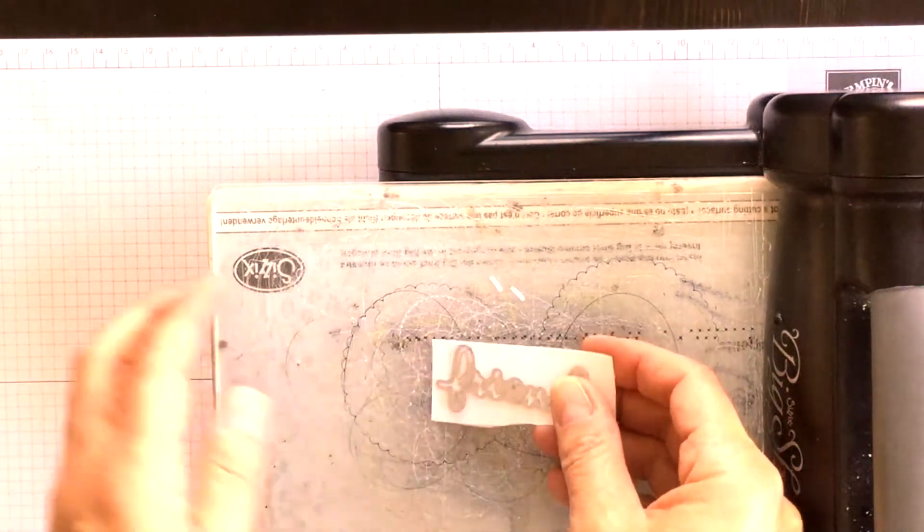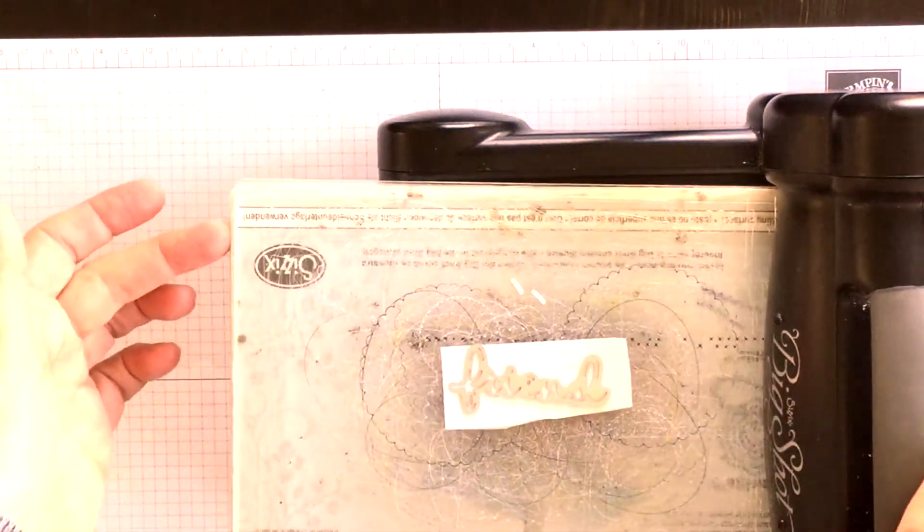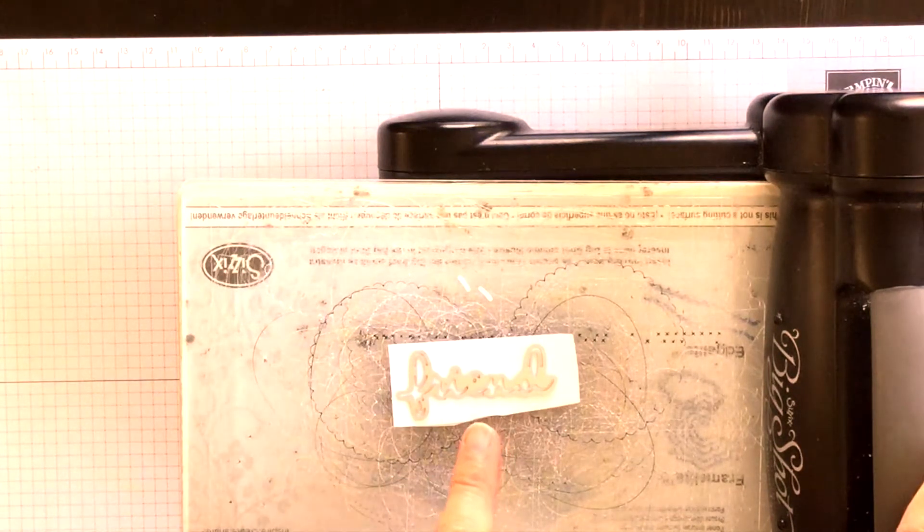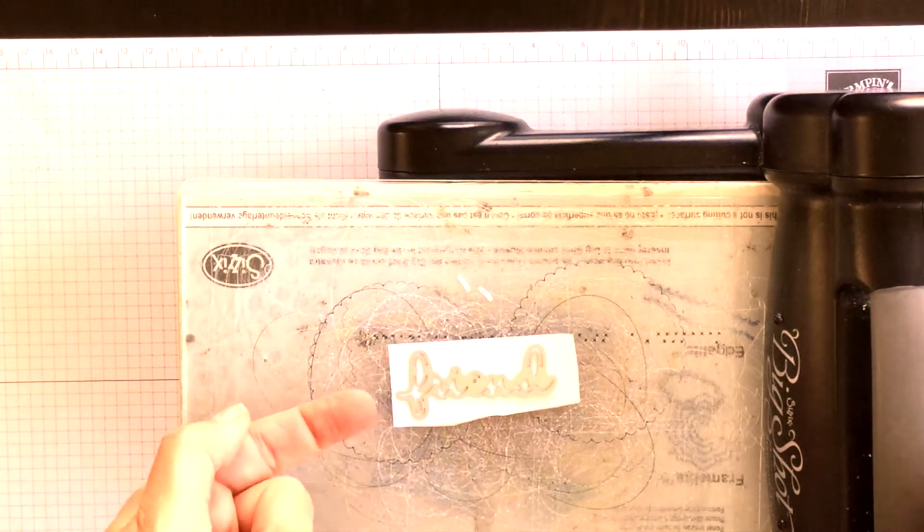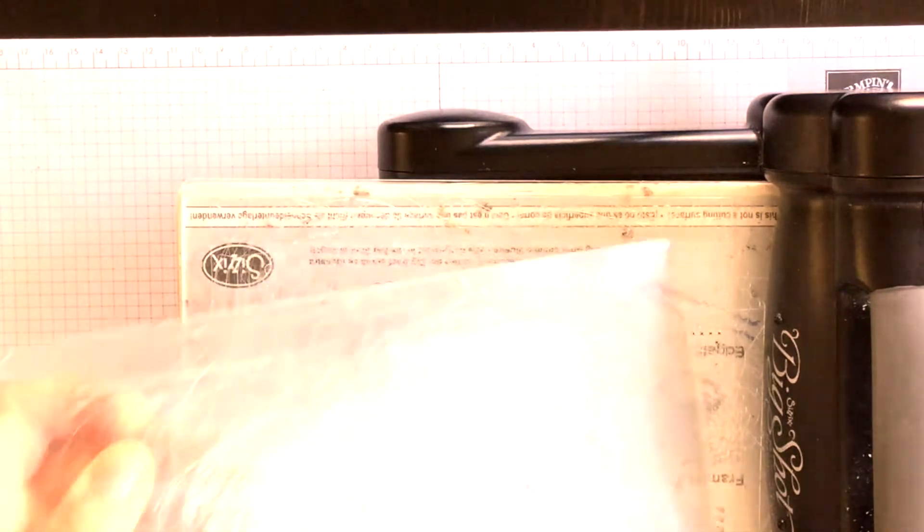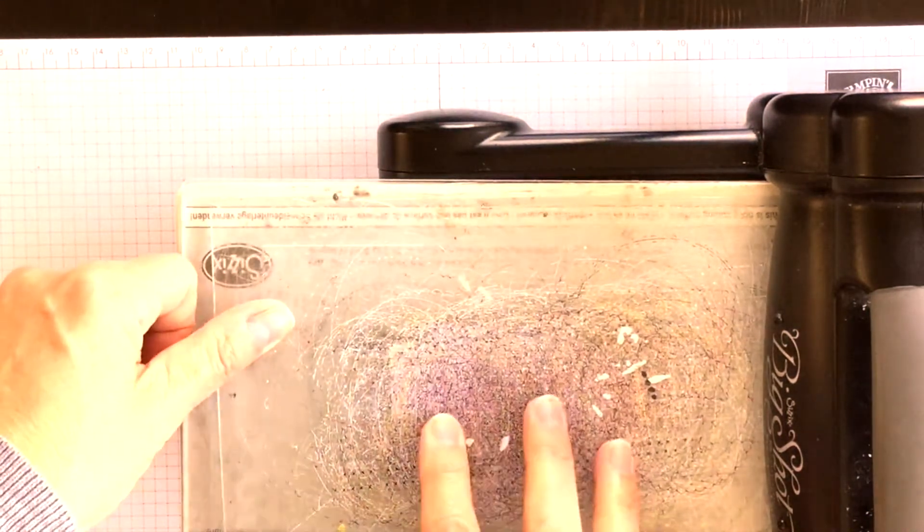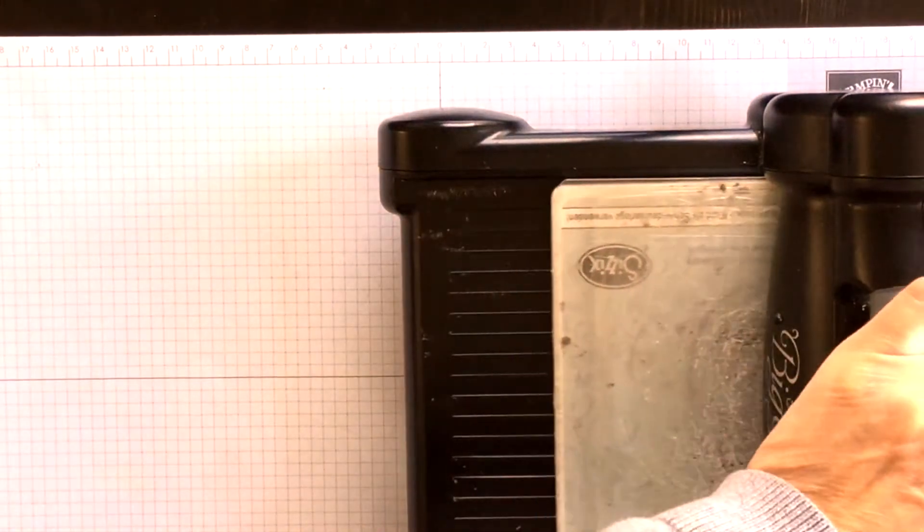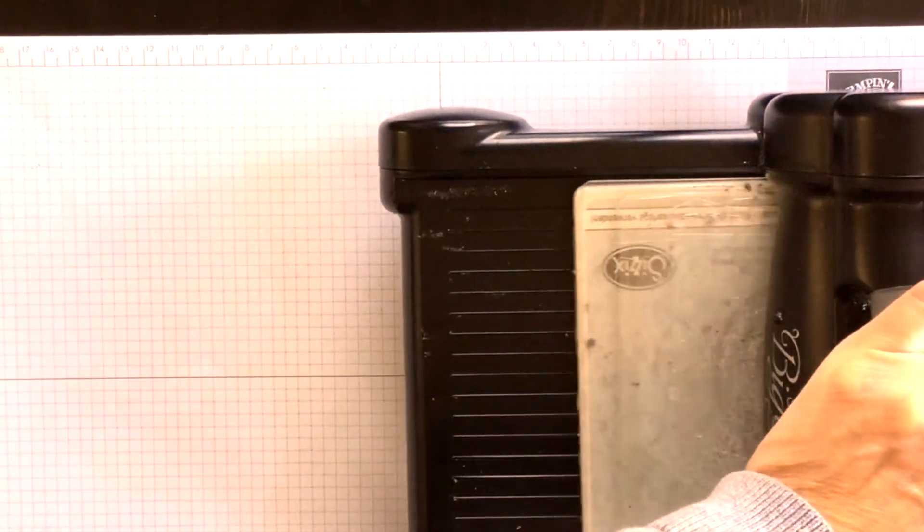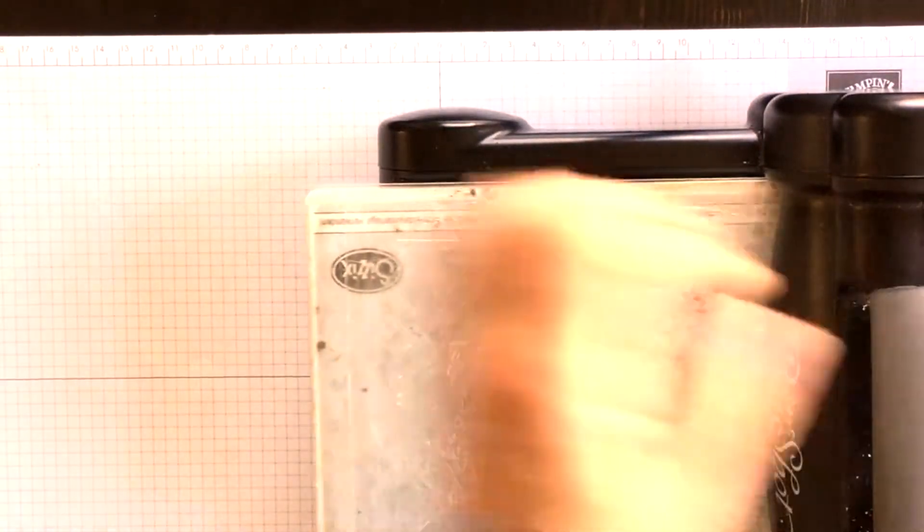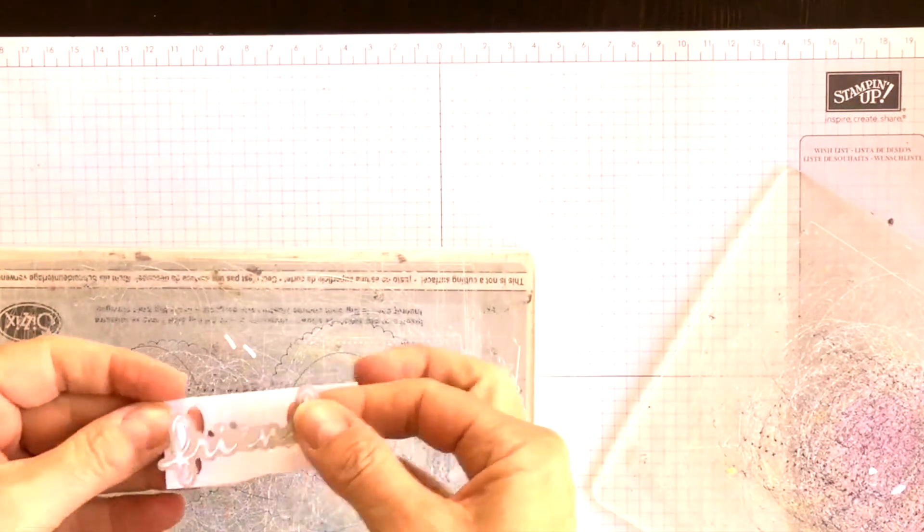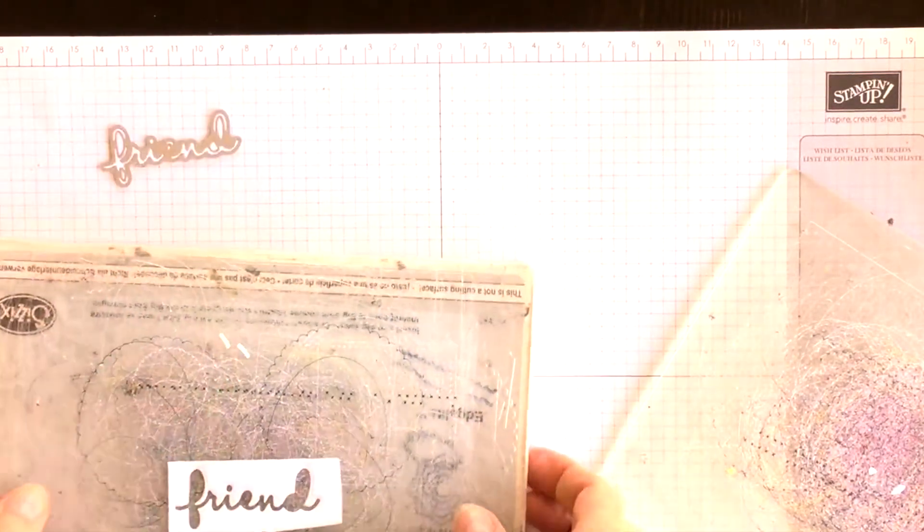So I'm going to use my magnetic platform, my bottom standard cutting pad and then I have the cardstock with the friend on it and the multi-purpose adhesive sheet is on the bottom. Then I'm going to run it forward and back through my Big Shot and the reason I'm going back is just to give it a second pressure so that hopefully it pops out of the framelit very easily.